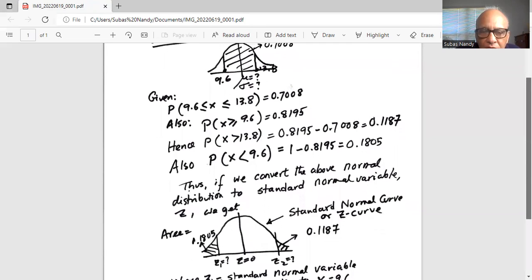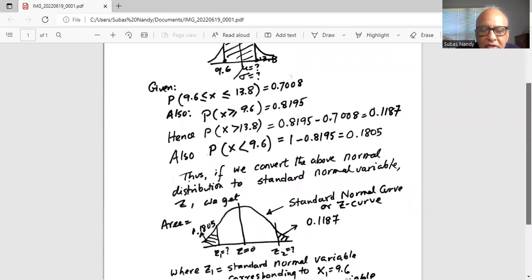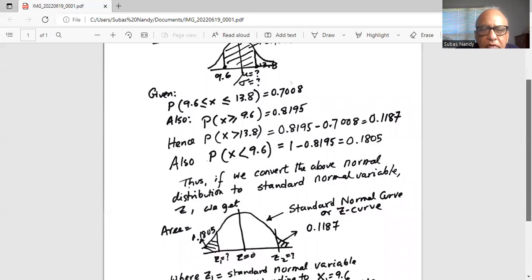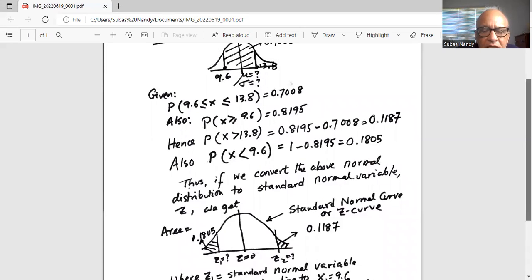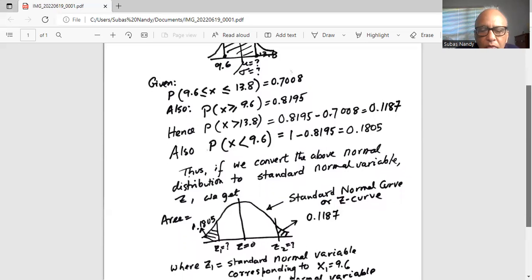For X < 9.6, which we indicate by standard normal variable z₁, the probability P(Z < z₁), where z₁ corresponds to 9.6, is 0.1805.